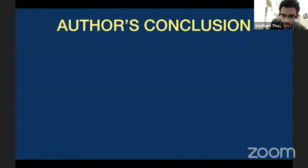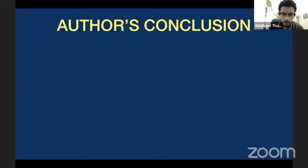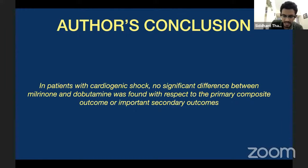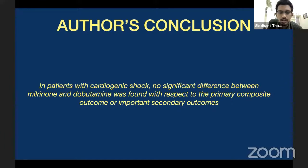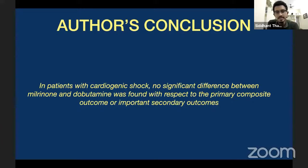The last part of the pre-checklist is the author's conclusion. You look at what the authors concluded from the randomized control trial. These investigators concluded that in patients with cardiogenic shock, there was no significant difference between milrinone and dobutamine in the primary or secondary outcomes. They concluded that whether or not you give milrinone or dobutamine, it doesn't really matter — there's no change in any outcome. Milrinone may not have better efficacy than dobutamine. Now the appraisal comes down to whether or not their conclusion is right or wrong.